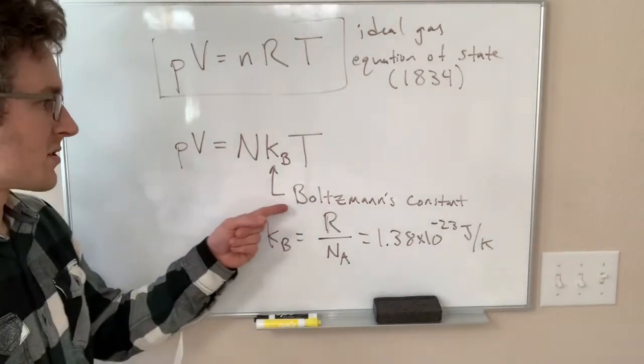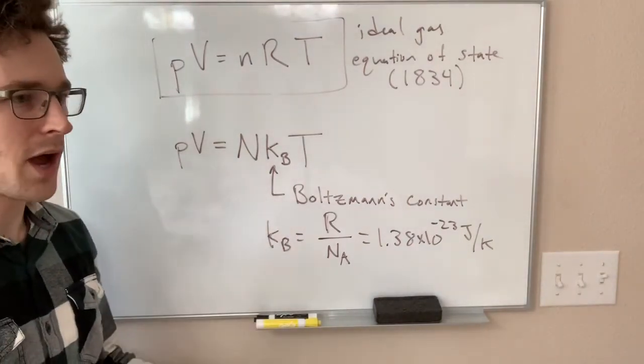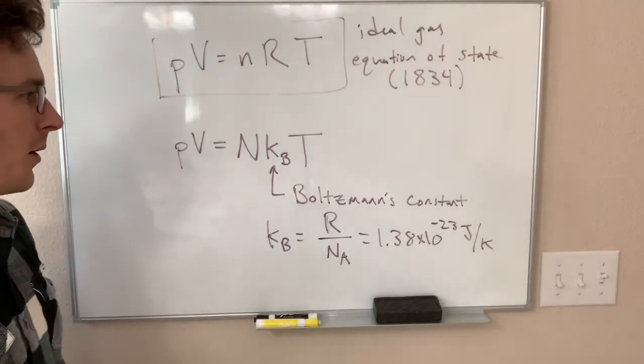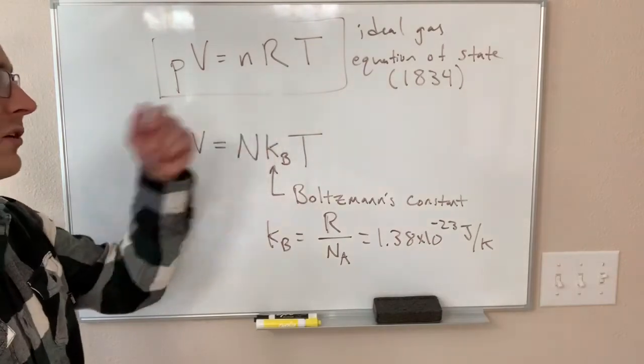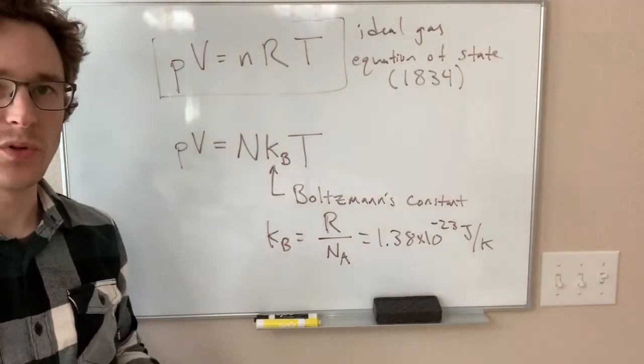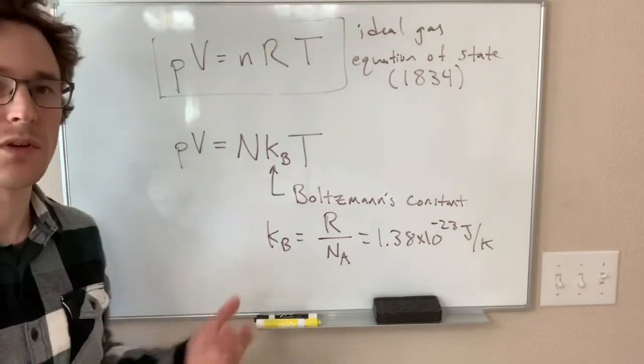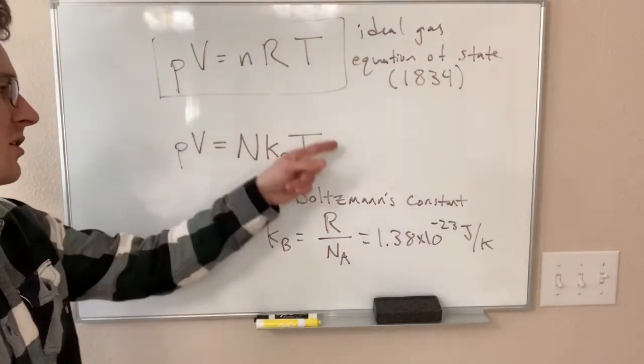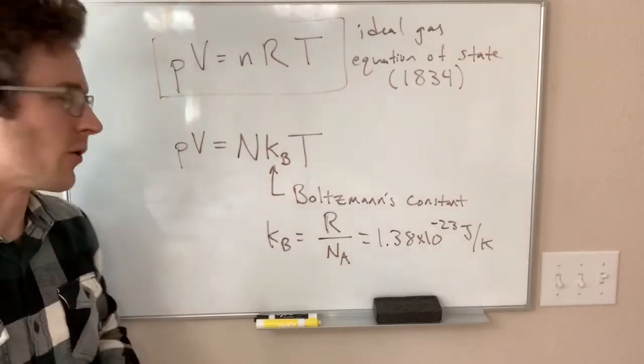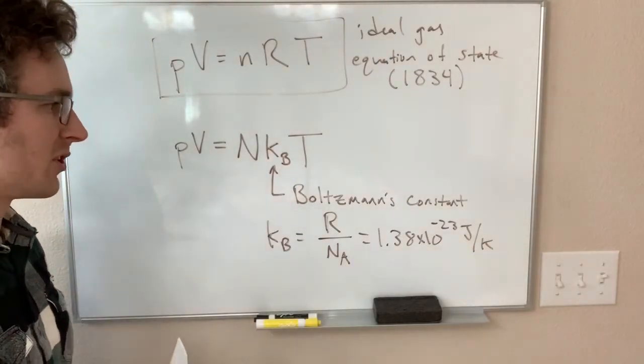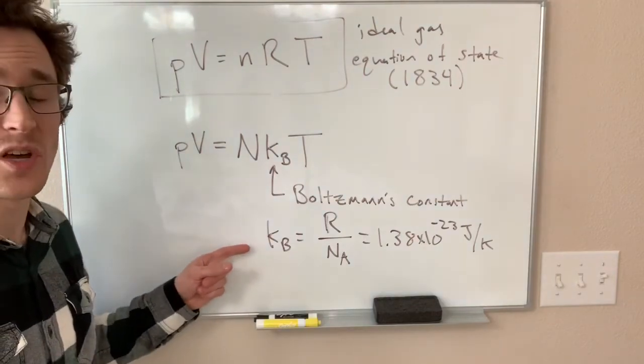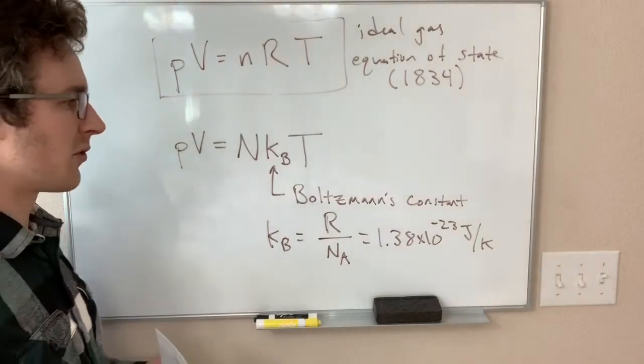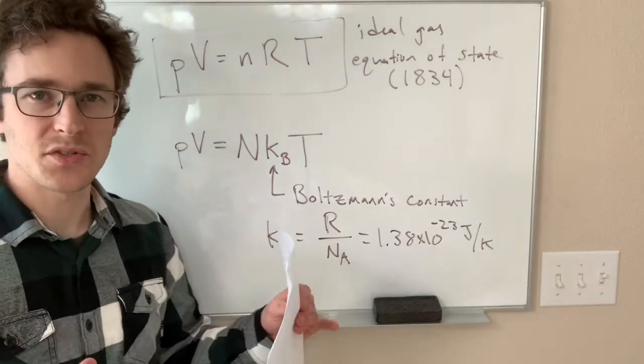Boltzmann's constant, it turns out, is the more fundamental constant of the universe compared to the ideal gas constant, which involves this definition of moles. So, I would argue that this is the more fundamental ideal gas equation, and Boltzmann's constant is the more fundamental of the units. Boltzmann's constant shows up a million other places in physics, and the biggest reason for that is, if you have a bunch of particles that are at some temperature...